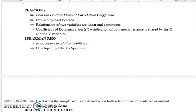Coefficient of determination سے مراد یہ ہوتی ہے کہ دونوں variables میں کتنی variation cause ہو رہی ہے — variable X کتنی variation cause کر رہا ہے اور variable Y کتنی۔ آپ simply Pearson r کی value کو square کر کے 100 سے multiply کر دیتے ہیں۔ مثلاً r² کی value 0.81 ہو تو مطلب ہے کہ 81% variance یہ دونوں variables cause کر رہے ہیں اور باقی 19% error یا chance کی وجہ سے آیا ہے۔